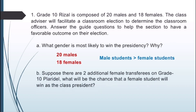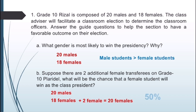For the second question: suppose there are two additional female transferees in the Grade 10 class. What will be the chance that a female student will win as class president? Since there are two additional females, the sample space of female students becomes 20. Therefore, the chance is 50% that the class president will be a female student.